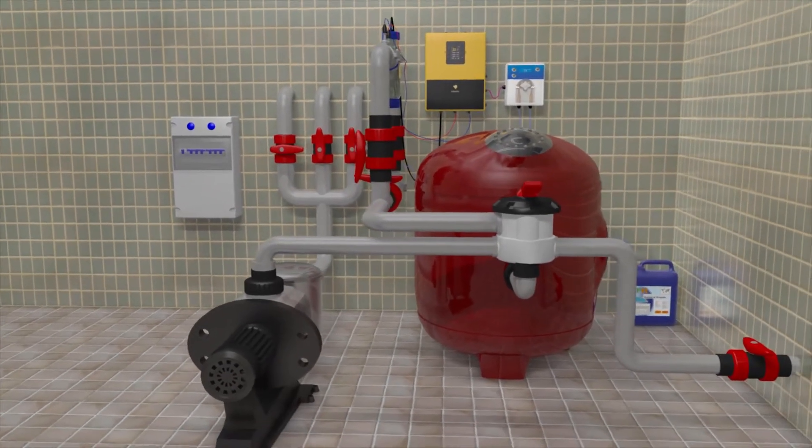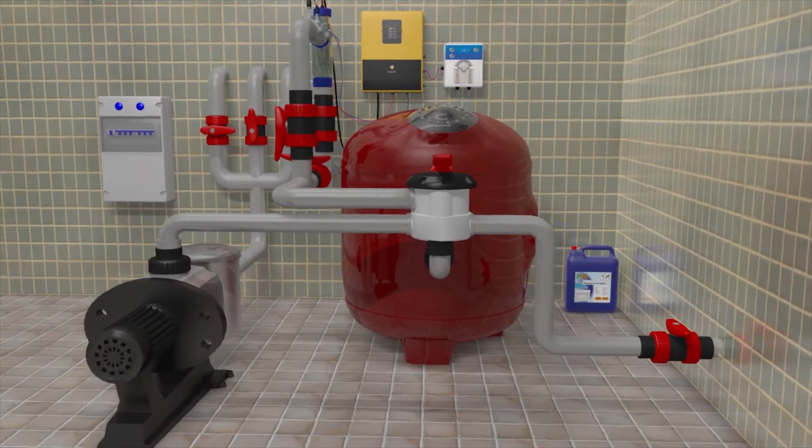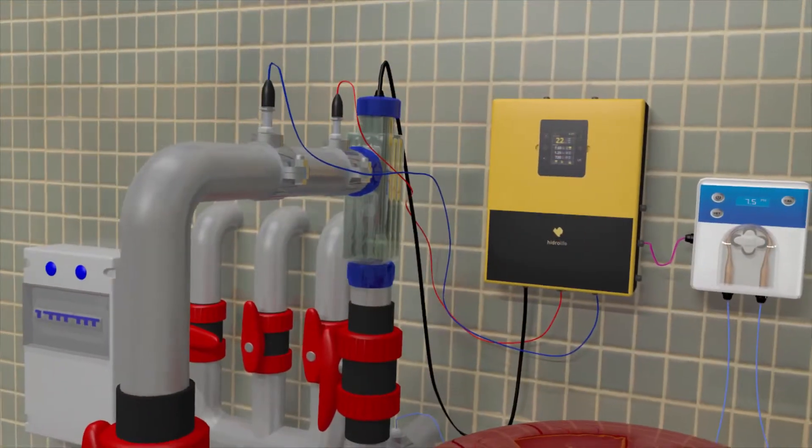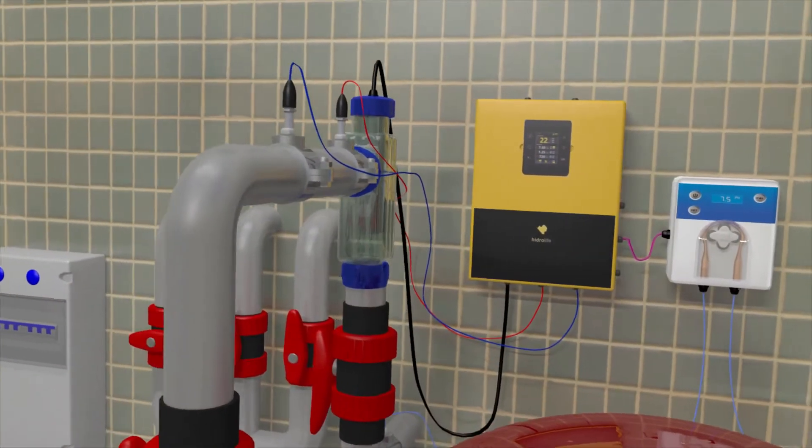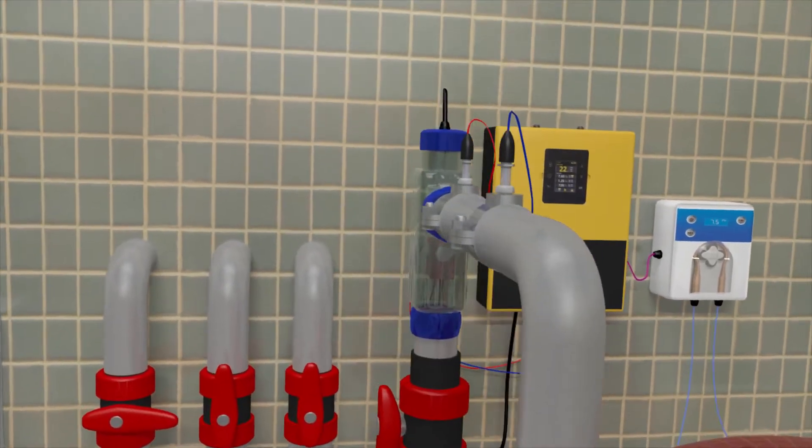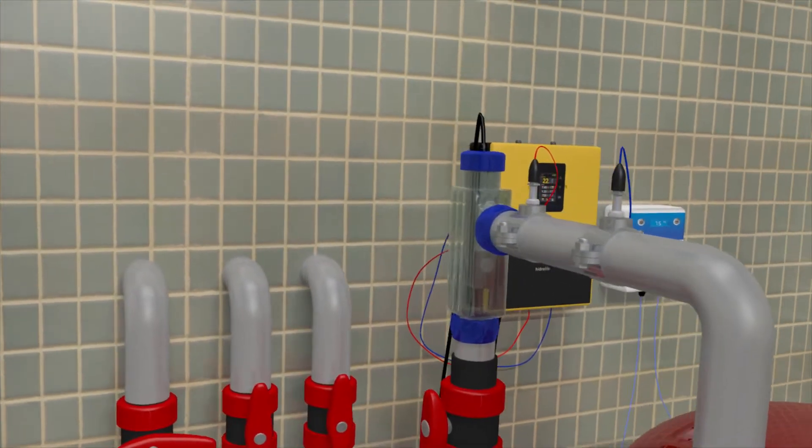A more natural way to obtain chlorine is the salt electrolysis system, which generates the chlorine directly at the pool by using salt. It's like a small chlorine factory at home.